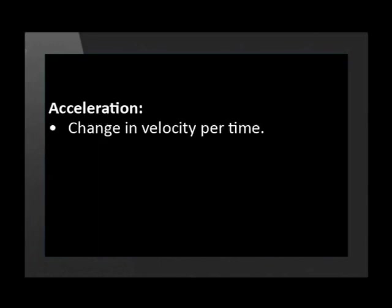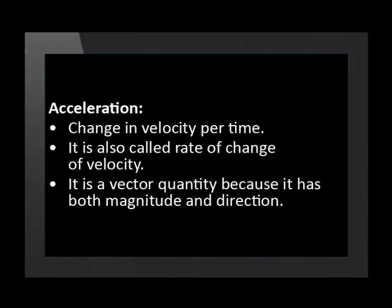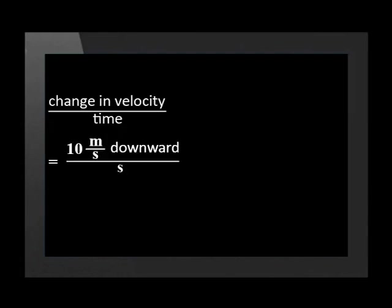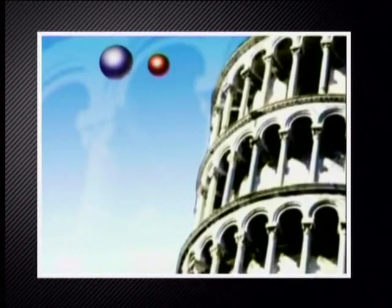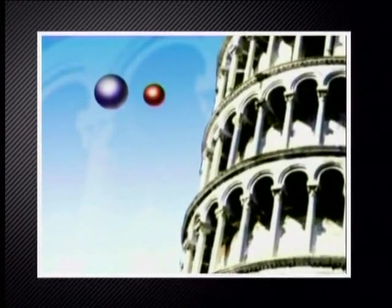We write this as 10 meters per second squared downward. Acceleration is the change in velocity per time — also called the rate of change of velocity. It is a vector quantity, meaning it has both magnitude and direction. This projectile accelerates at 10 meters per second squared downward.